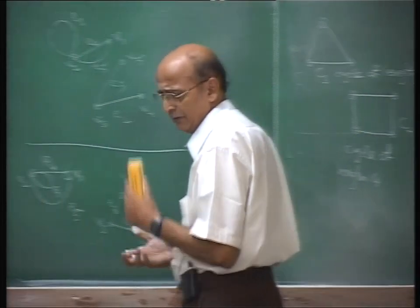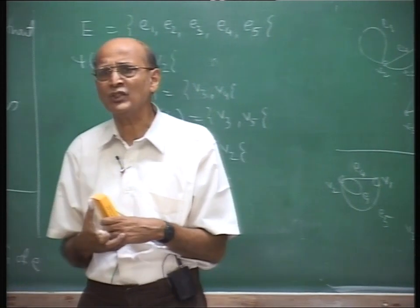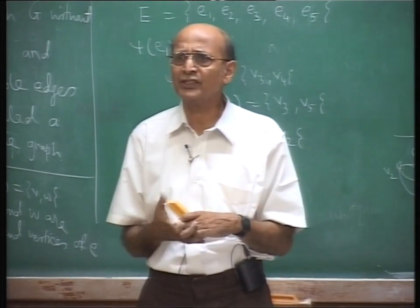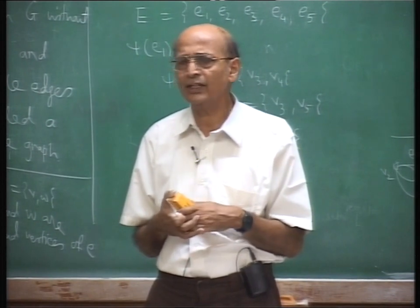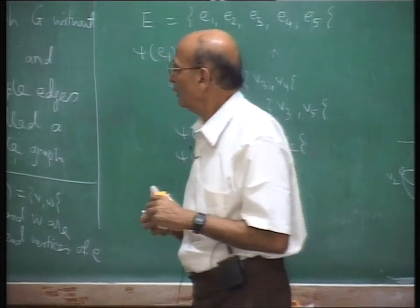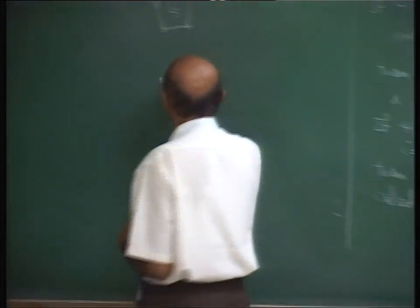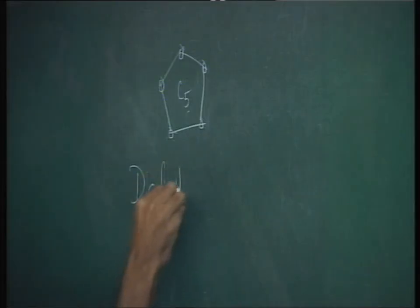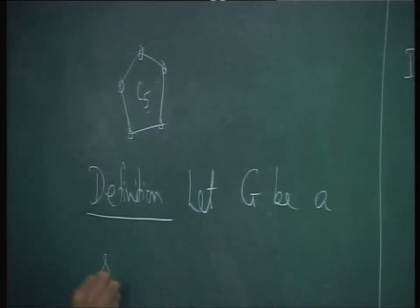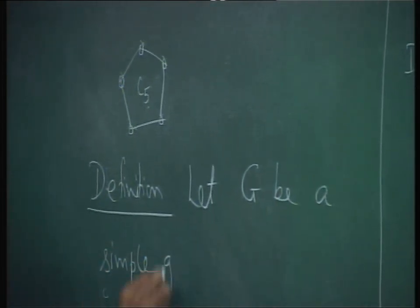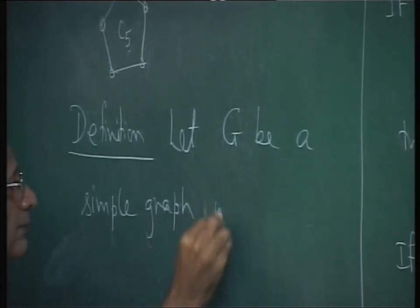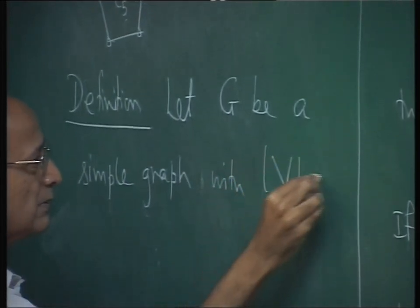When a graph is simple, things become easier in terms of counting. Simple graphs form a very important class of graphs — many times you can prove all the theorems for simple graphs and then say they extend to other kinds of graphs. Therefore you can begin your proof by saying: without loss of generality, let me take this graph to be a simple graph.